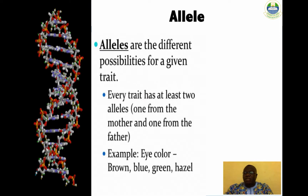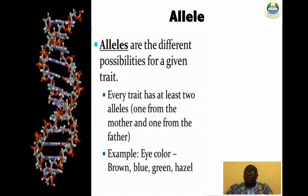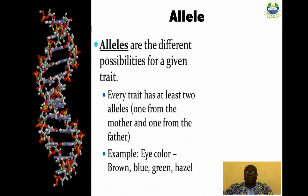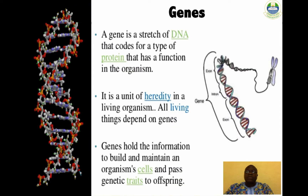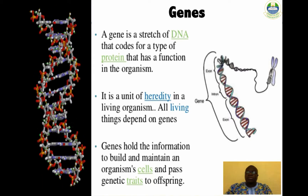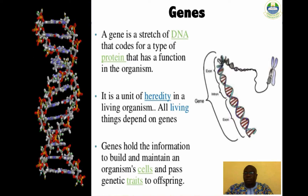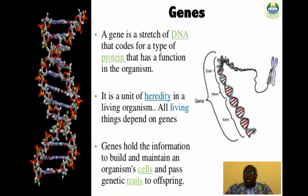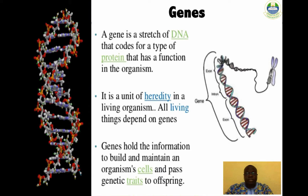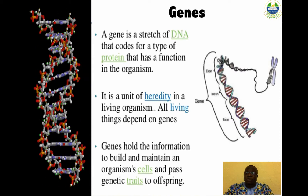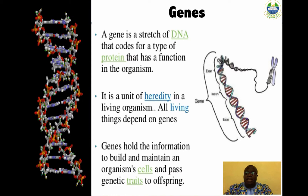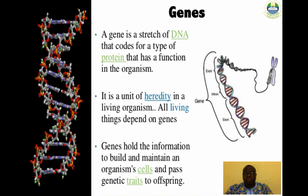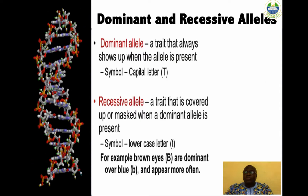Alleles are alternative forms of a gene located at a specific position on a specific chromosome. Organisms have two alleles for each trait. A gene is the basic unit of heredity in living organisms. Genes hold the information to build and maintain cells and pass genetic traits to offspring. Genes are segments of DNA carried on chromosomes that determine specific characteristics.